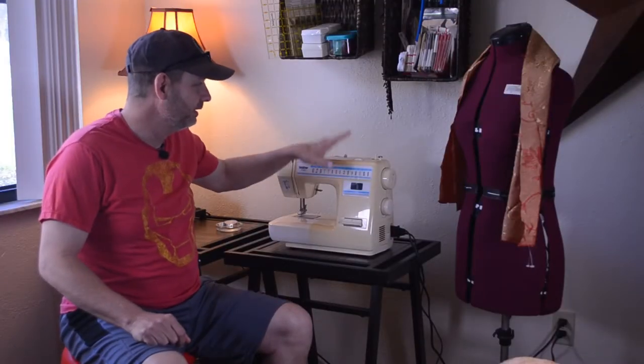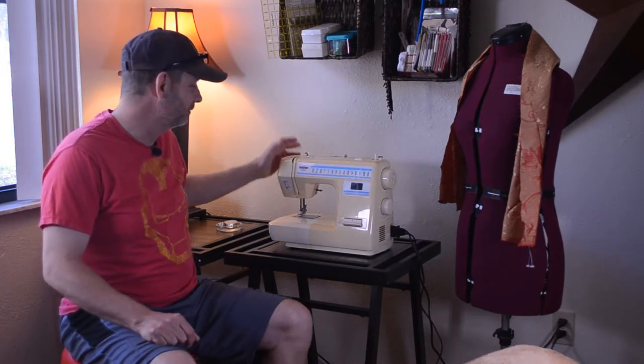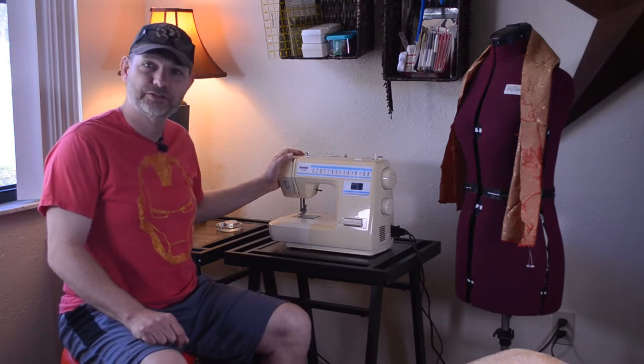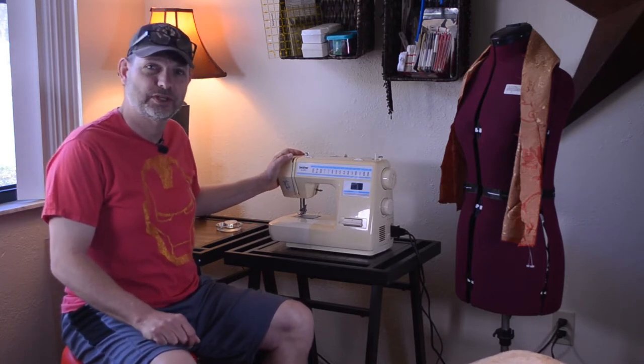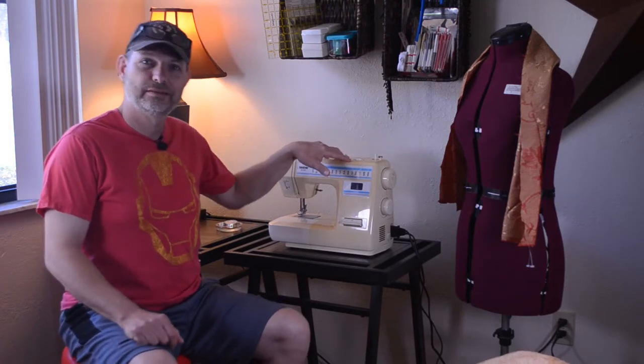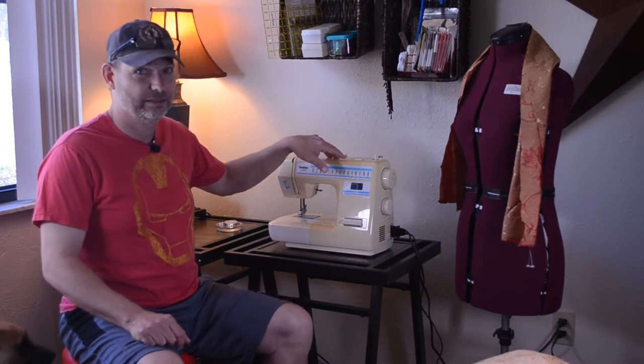So this is Ellie's sewing machine. It sat in storage for quite a long time, 12 years, and we want to make sure that it's up to par and can work. She wants to make a skirt. She likes to sew and she wants to try her hand at making a skirt. Thanks to Bernadette Banner. Go check her out. That lady is pretty cool.